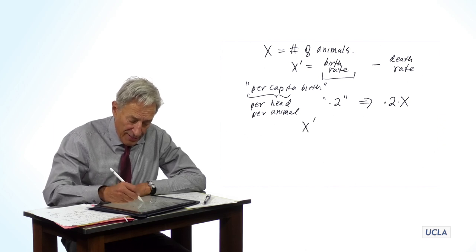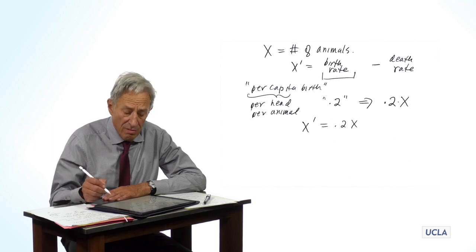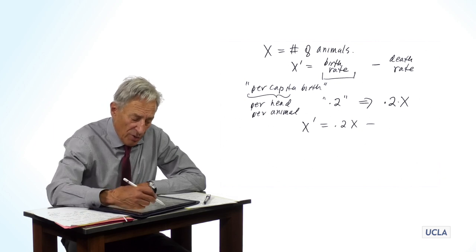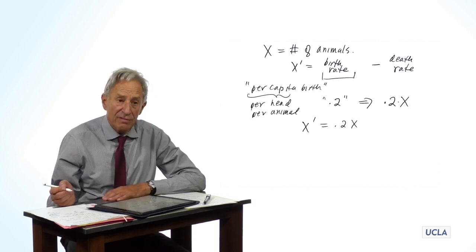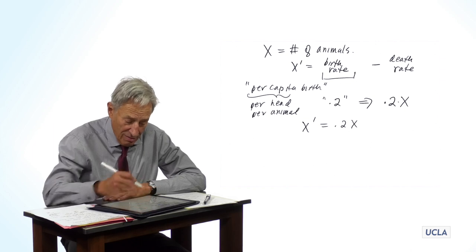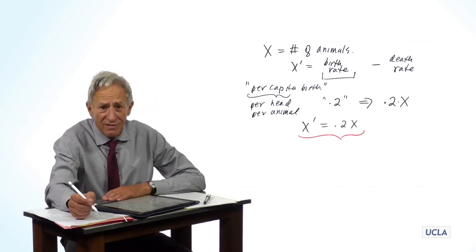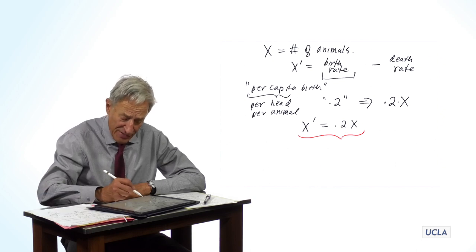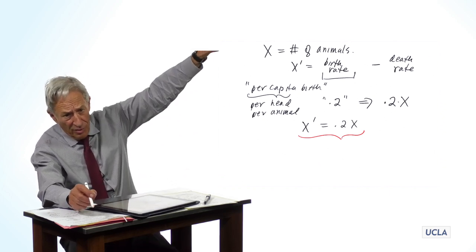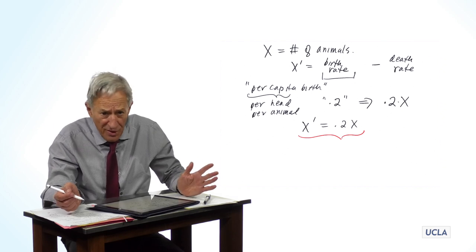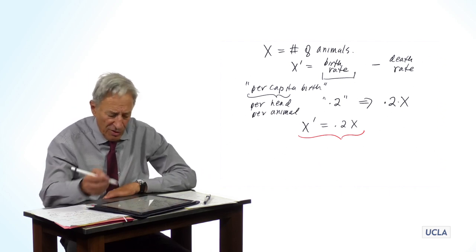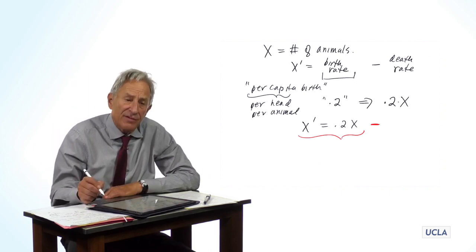So we can now write X prime equals 0.2X and now we need something to subtract. But you say, what if we didn't have something to subtract? Well, this is a model without a death rate and with only positive terms. Since X is positive, 0.2X is going to be positive. This says that X is going to grow and grow and grow because nothing is subtracting. Nothing is making X go down. And if nothing makes X go down, X will only go up.